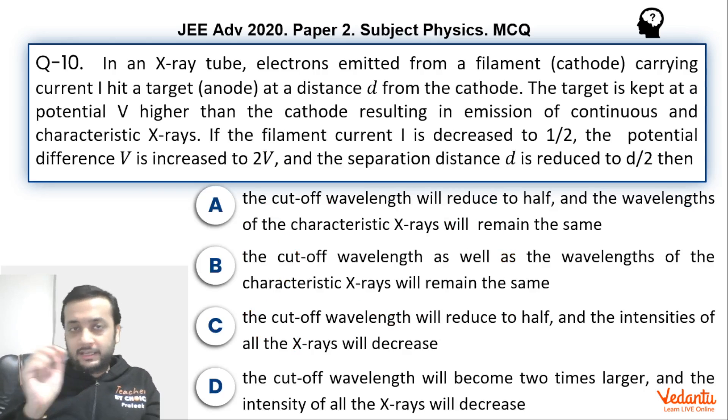Characteristic wavelength, their intensity will not change. Because characteristic wavelength does not depend upon the energy of the incoming electron. It is the energy difference between the two shells. So basically it depends upon the target element. So it is not going to change.